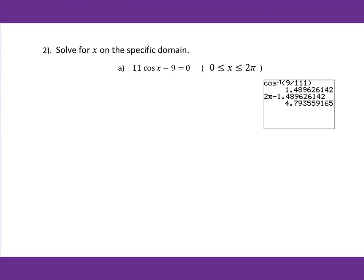Today's lesson is about review for solving trig equations with a graphing calculator. For number 2, solve for x on the specific domain. For part A, 11cos(x) minus 9 equals 0. We're looking for the solution between 0 to 2pi.